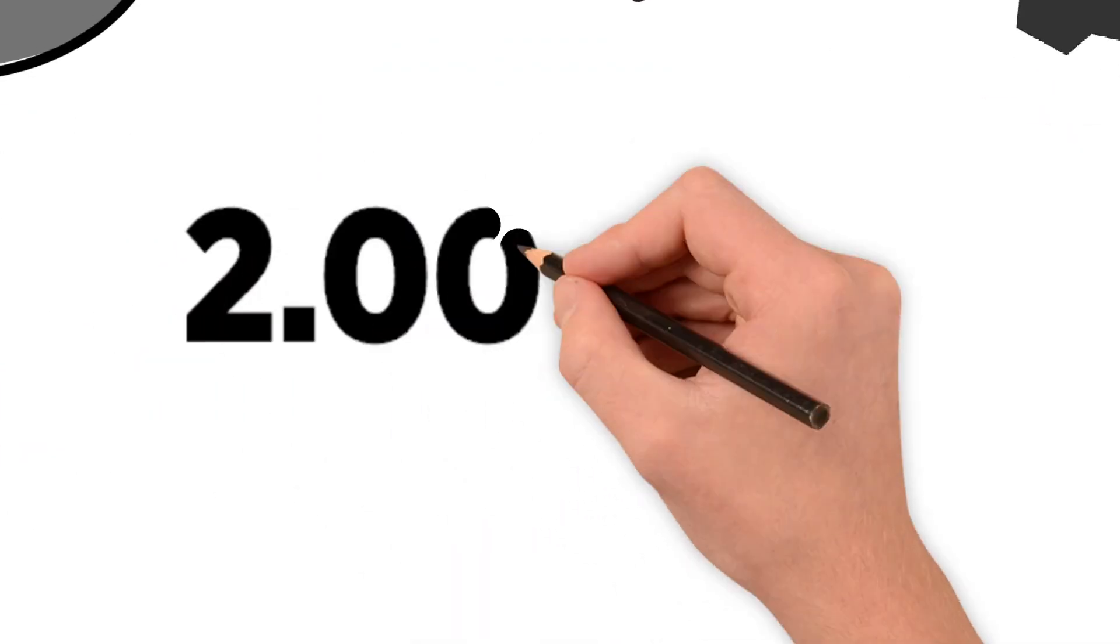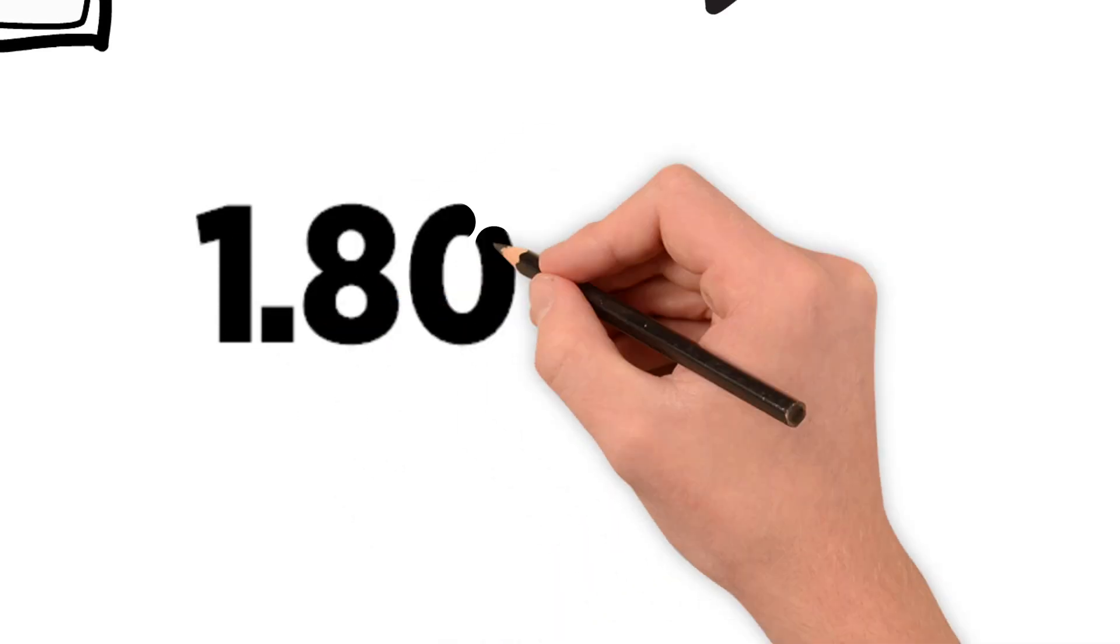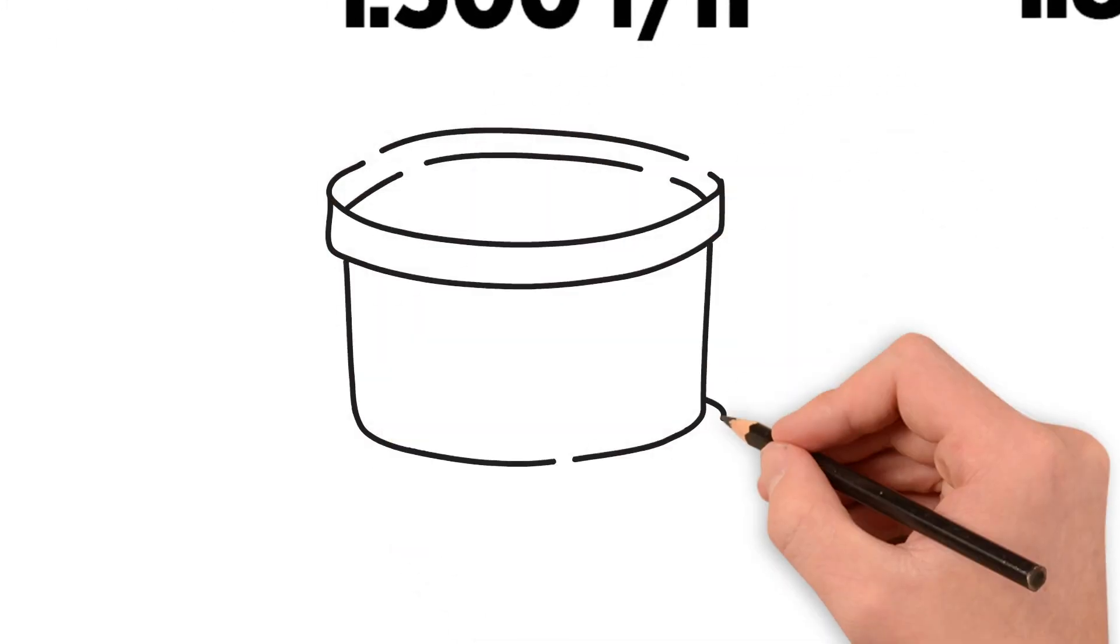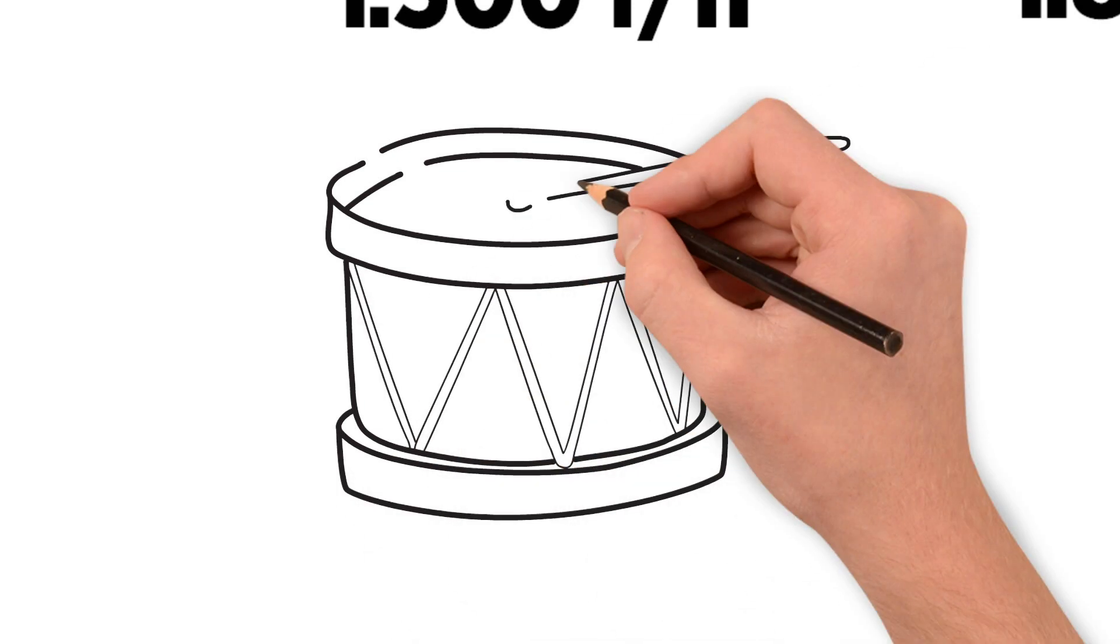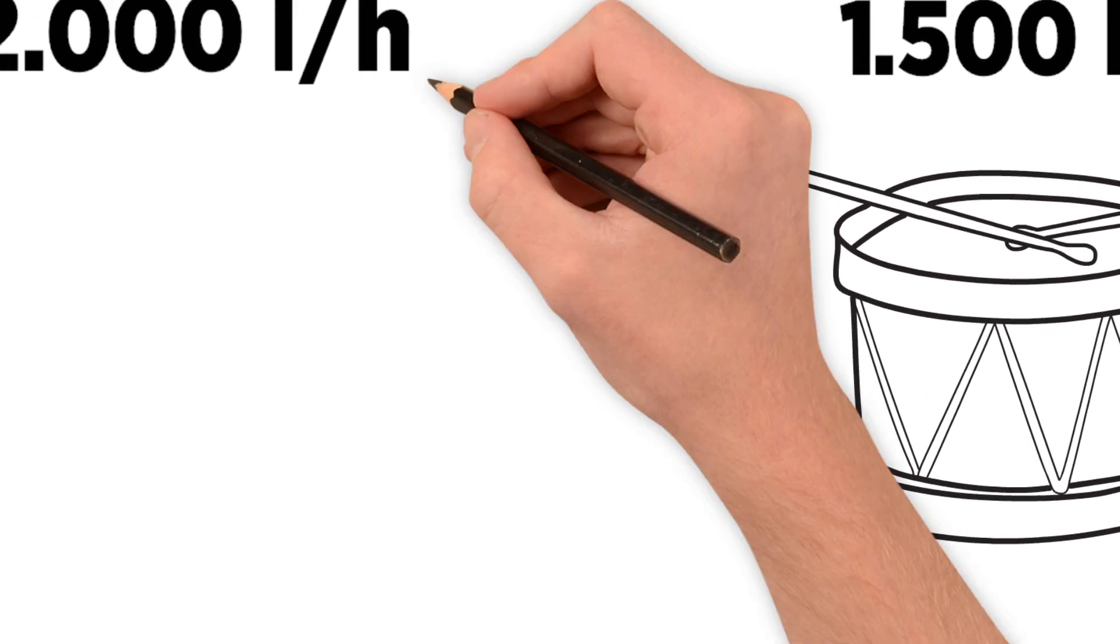2000 liters of juice can be pressed per hour. 1500 liters can be filtered per hour. 1800 liters can be bottled into one liter bottles. Therefore, the filter system limits the output of the production. The remaining parts of the production must be imparted to the output of this production step.